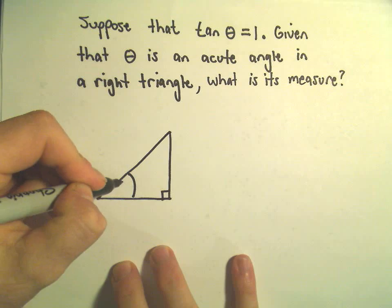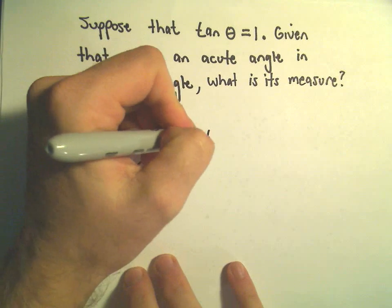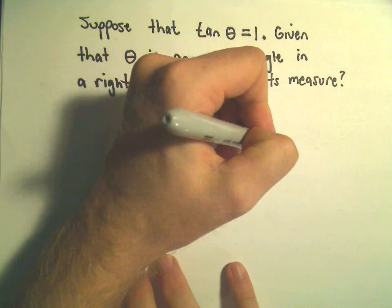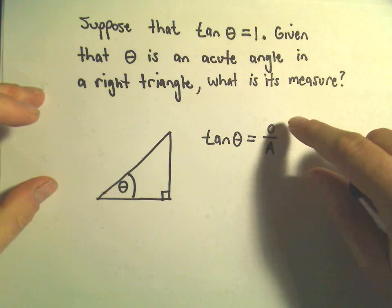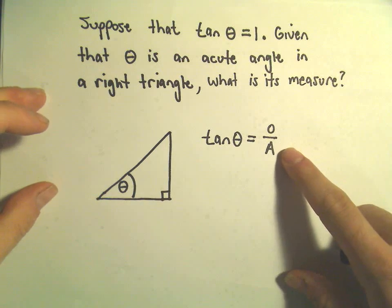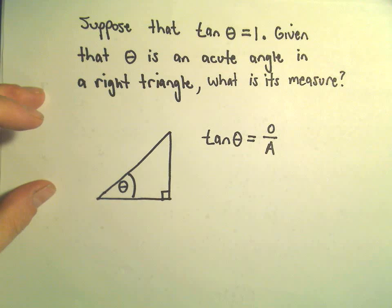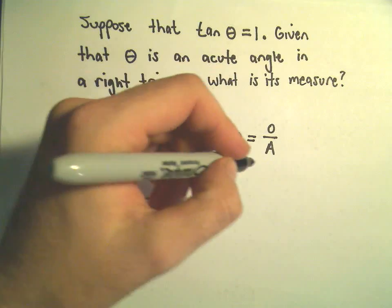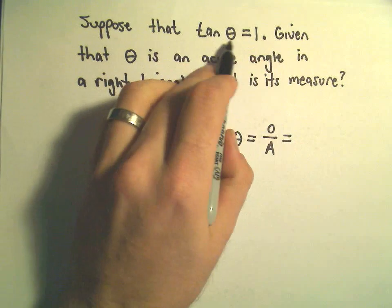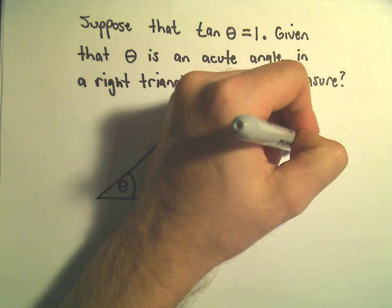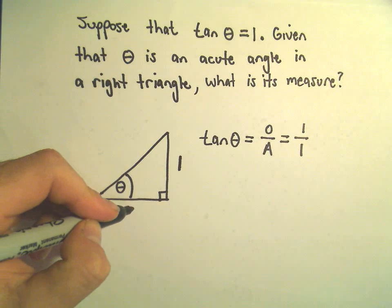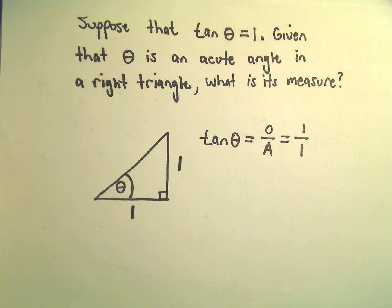So again, I'm going to put theta right down there. Remember, tangent of theta is the ratio of the length of the opposite side to the length of the adjacent side. Since we know tangent of theta equals 1, we can just write that as 1 over 1. So I'm simply going to make the opposite side have length 1 and the adjacent side also have length 1.